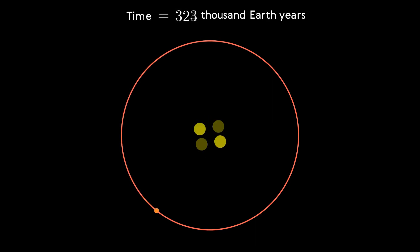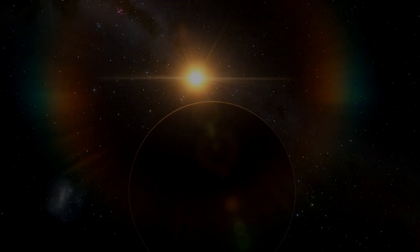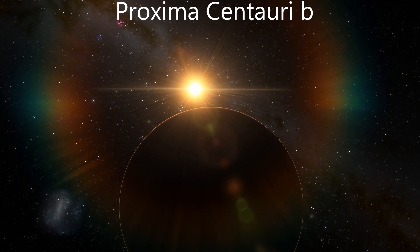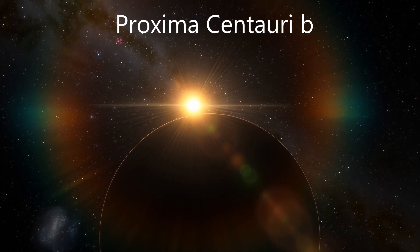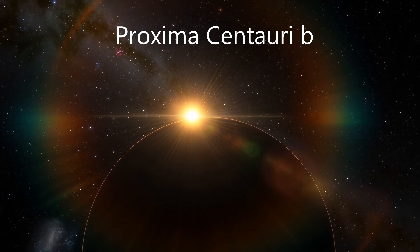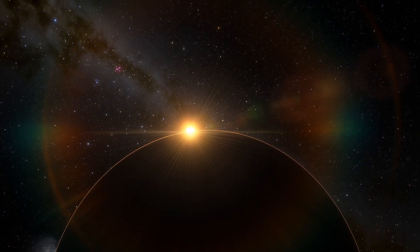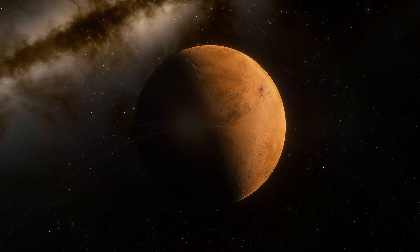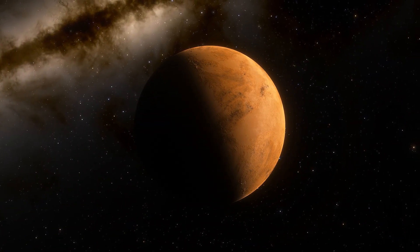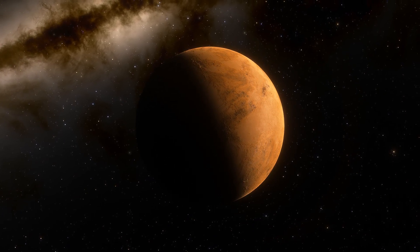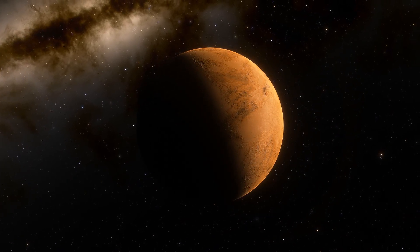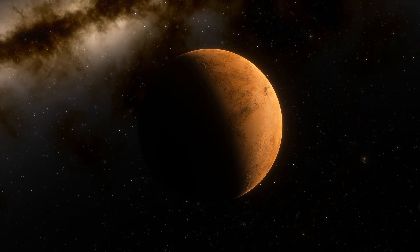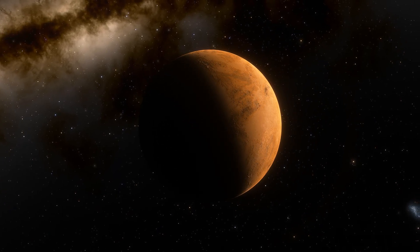There is one confirmed exoplanet known in this system, Proxima Centauri b, orbiting Proxima Centauri. It is located at a distance of approximately 4.22 light-years from Earth and is the nearest known exoplanet and at the same time the nearest exoplanet located in the habitable zone. The planet rotates at a distance of about 7.3 million kilometers from Proxima Centauri with an orbital period of about 11.2 Earth days.